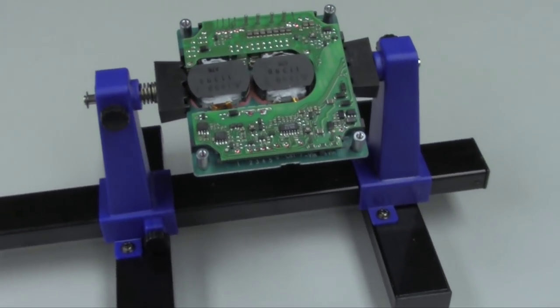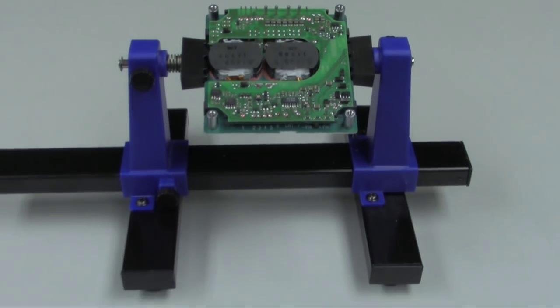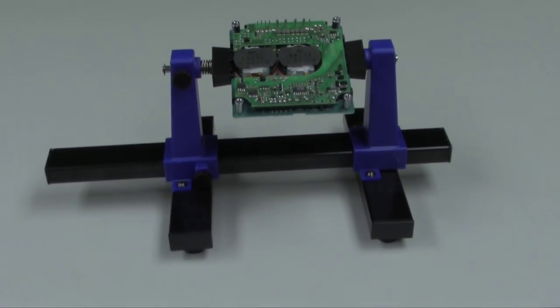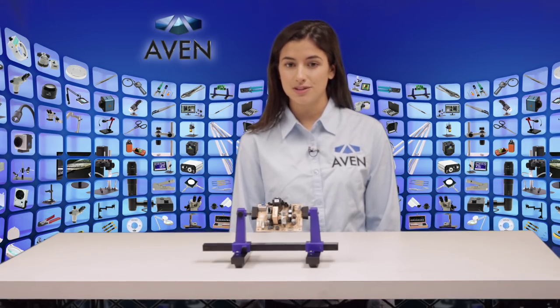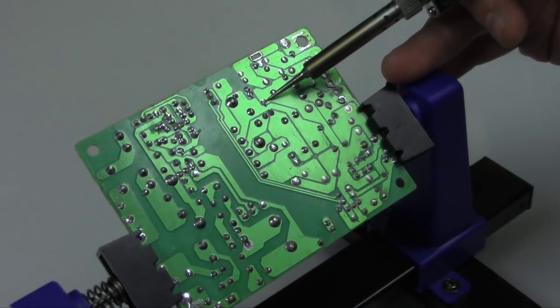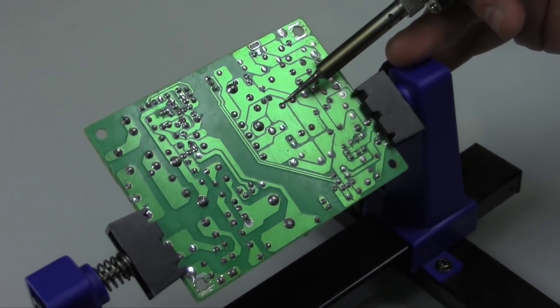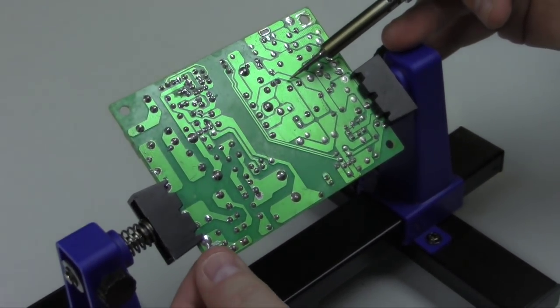This unique tool has proven valuable for both industrial and commercial applications as well as home repair and do-it-yourself projects. The adjustable holder is ideal for clamping circuit boards and holding them in place while performing soldering, desoldering, inspection, or rework operations.